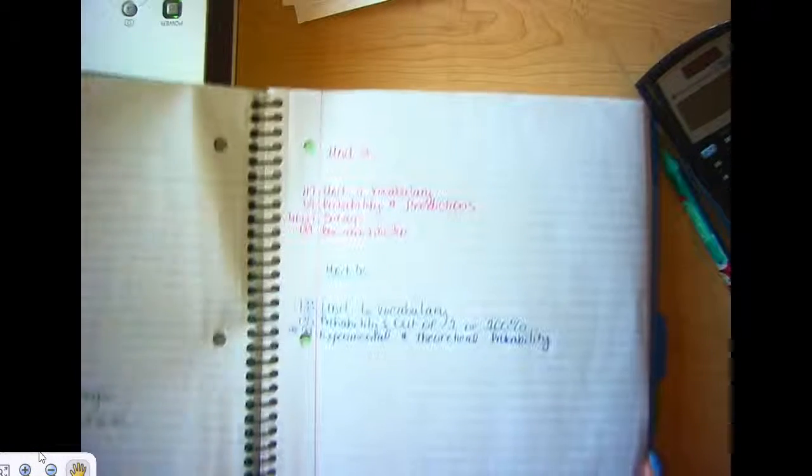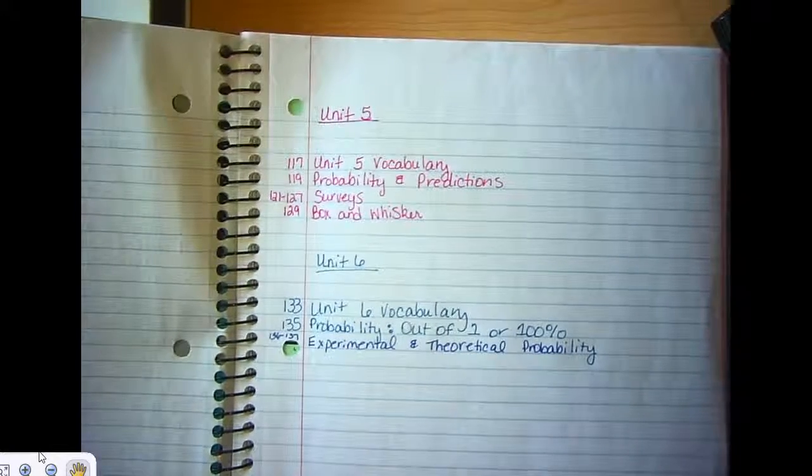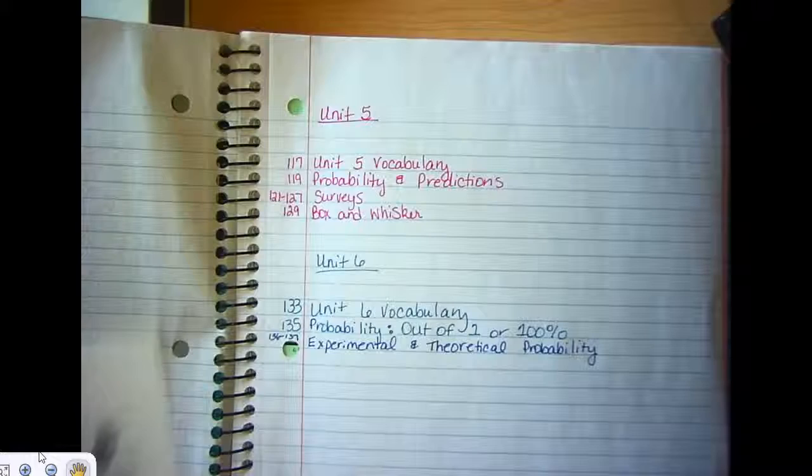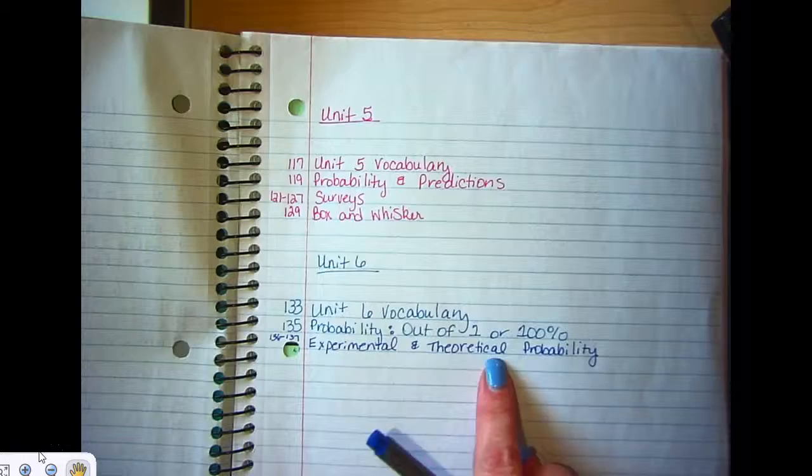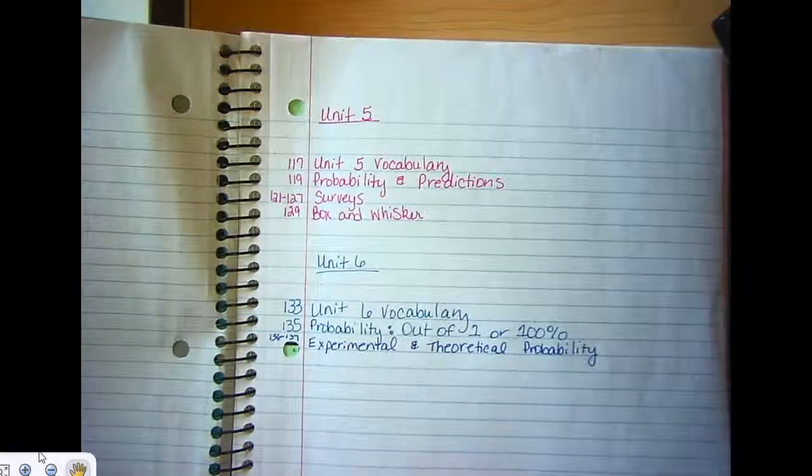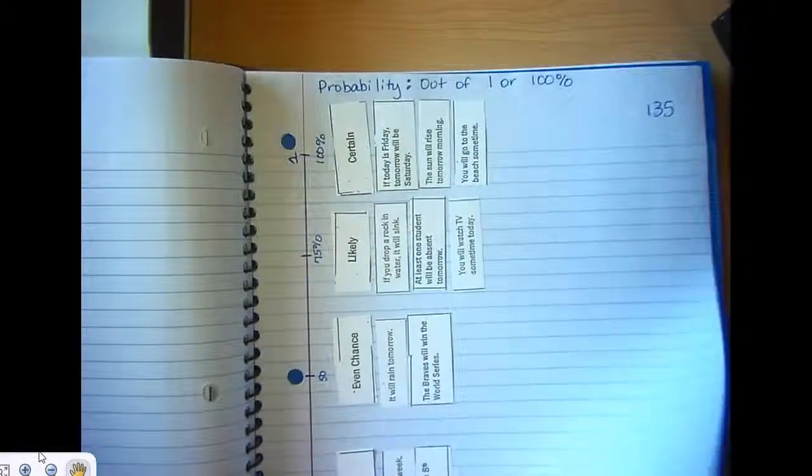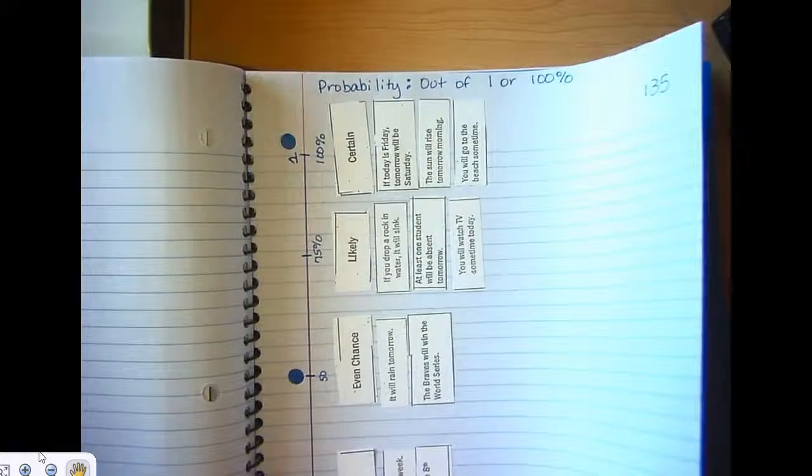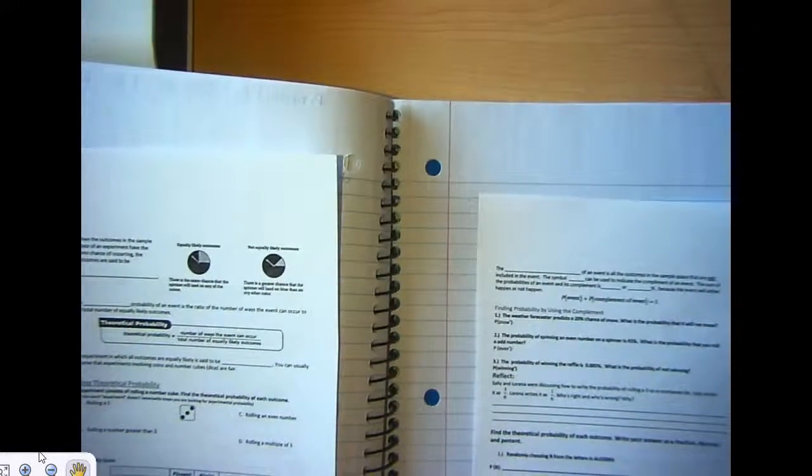Okay, so here is your table of contents and we are going to glue the notes you just took on pages 136 and 137. It's called Experimental and Theoretical Probability. So we'll go to those pages, 136 and 137. Because these were printed front and back, you're going to put them on, but be careful how you do this.